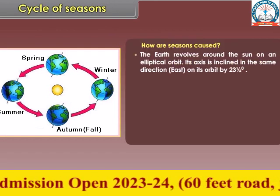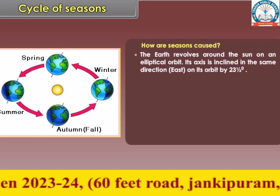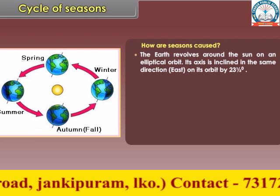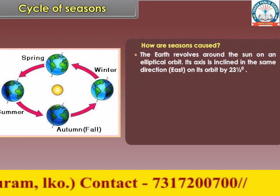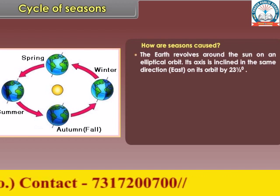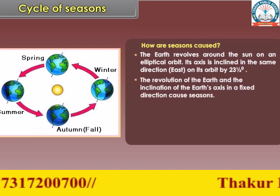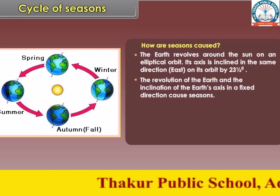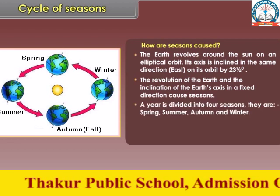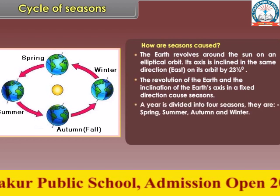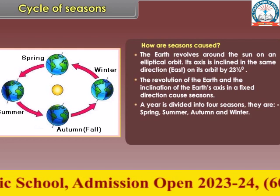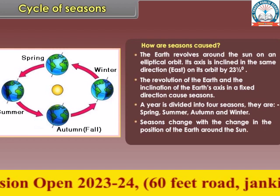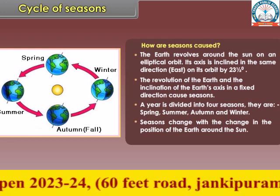The earth revolves around the sun on an elliptical orbit. Its axis is inclined in the same direction on its orbit by 23 and a half degrees. The revolution of the earth and the inclination of the earth's axis in a fixed direction cause seasons. A year is divided into four seasons: spring, summer, autumn, and winter. Seasons change with the change in the position of the earth around the sun.